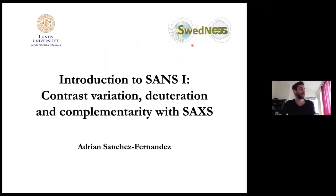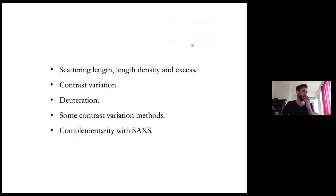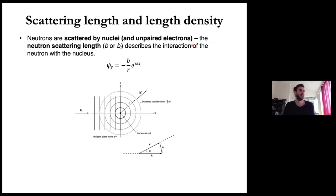In this second lecture, we are going to work on some of the concepts that Andrew explained in the first lecture and apply them to the specific case of small angle neutron scattering. Some of the ideas Andrew explained, for example scattering length and scattering length density, will be refreshed and then we will talk about how we use them in small angle neutron scattering. So just to start with, we're going to talk about scattering length.